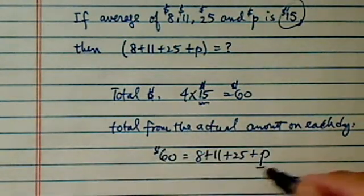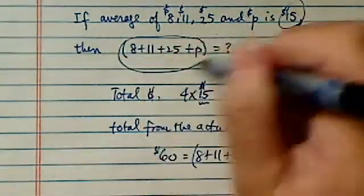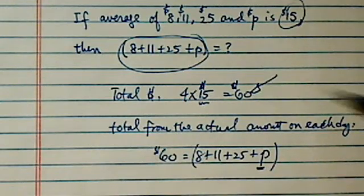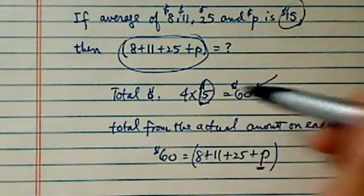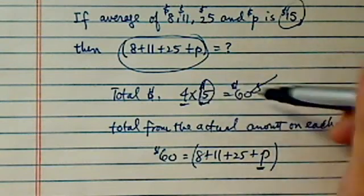Now whether you solve for P or not depends on what the question asks. If the question just wants to know what the total is, then you're done. The answer is 60, because on average you made $15, and you worked for four days, so average times 4 is $60.